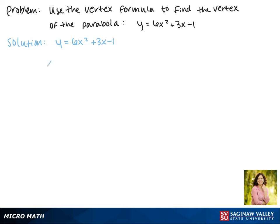Our first step is to find the x value of the vertex by using the vertex formula negative b over 2a.